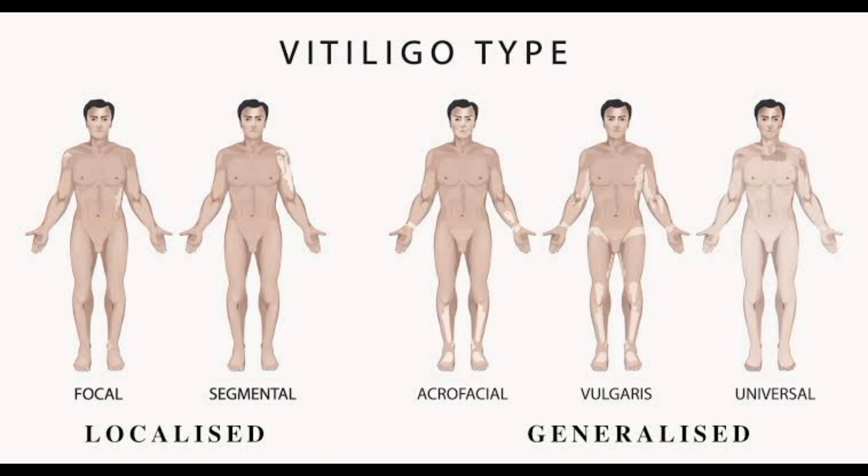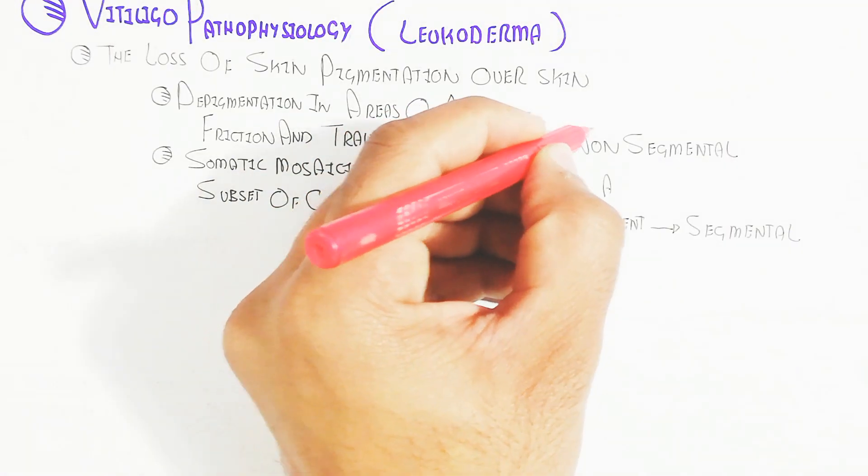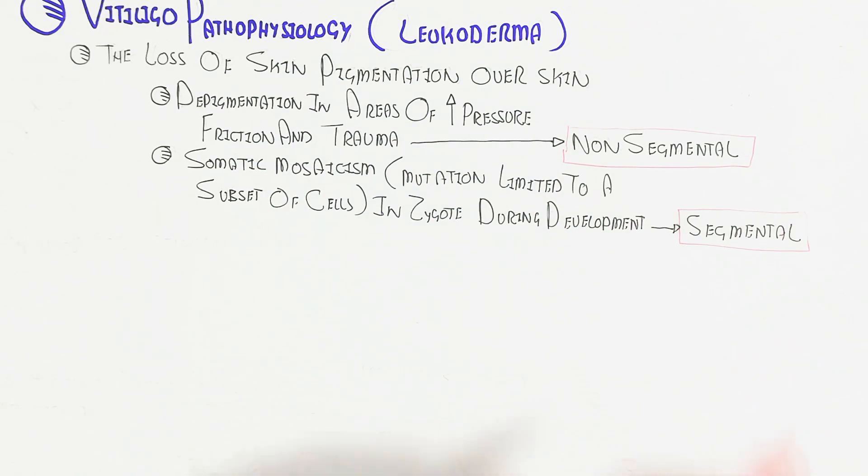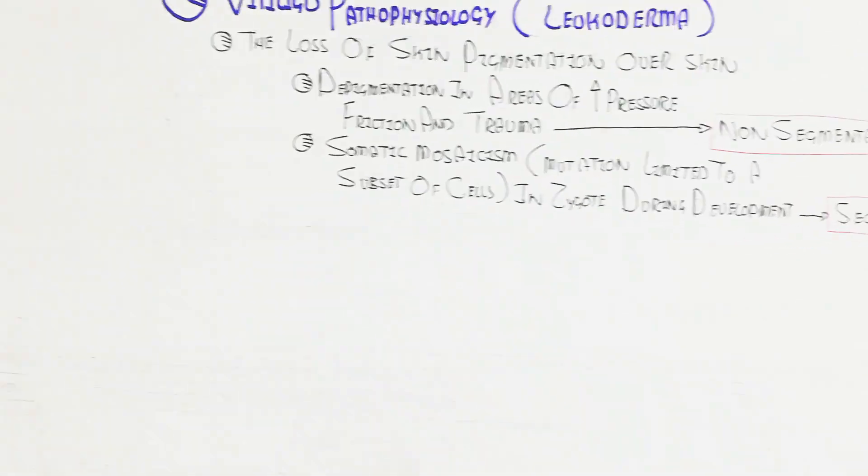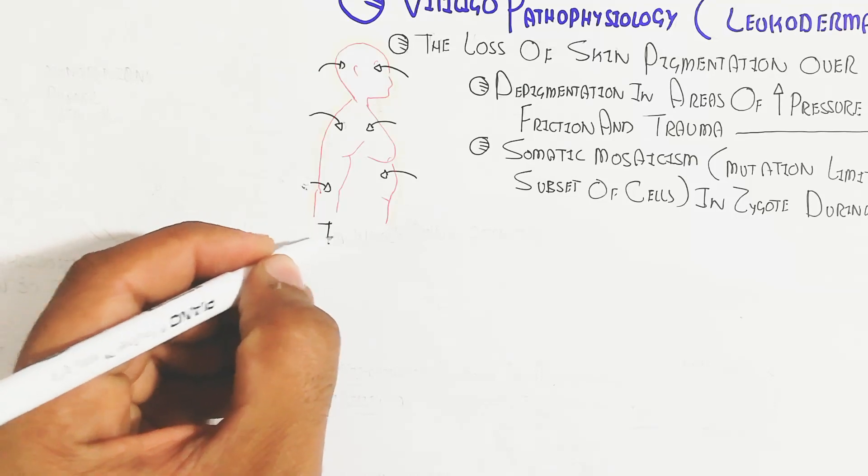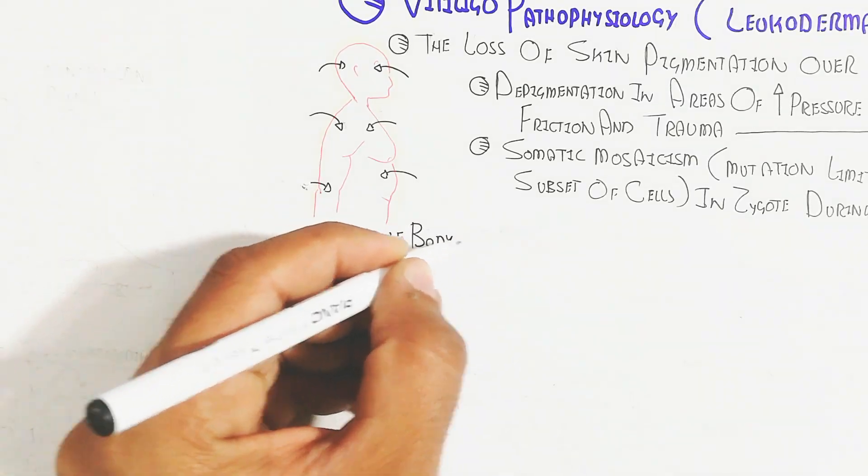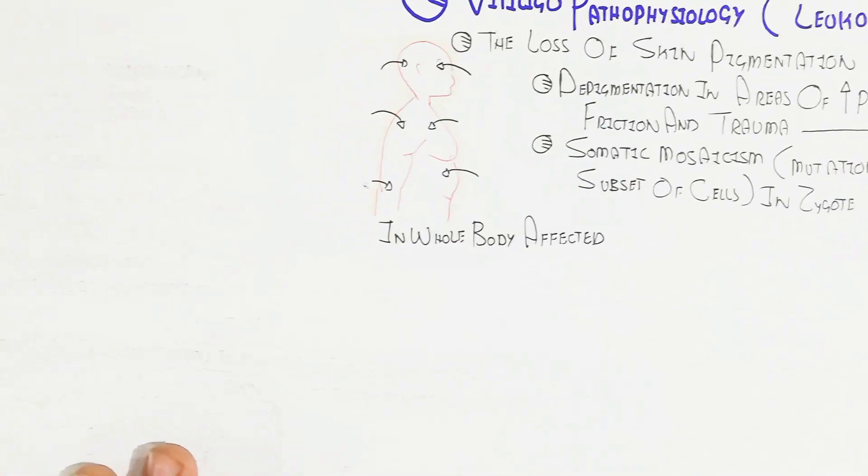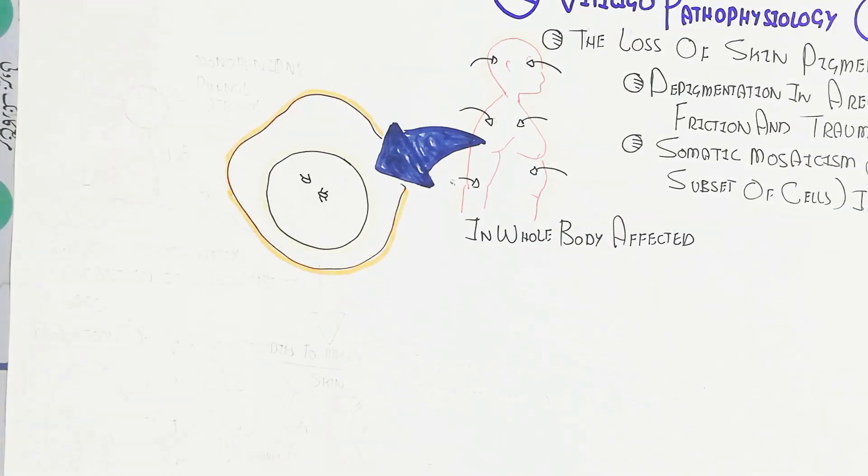Let's begin to understand the pathophysiology and how it works. Different areas in the whole body are affected, and basically we will discuss the melanocyte.